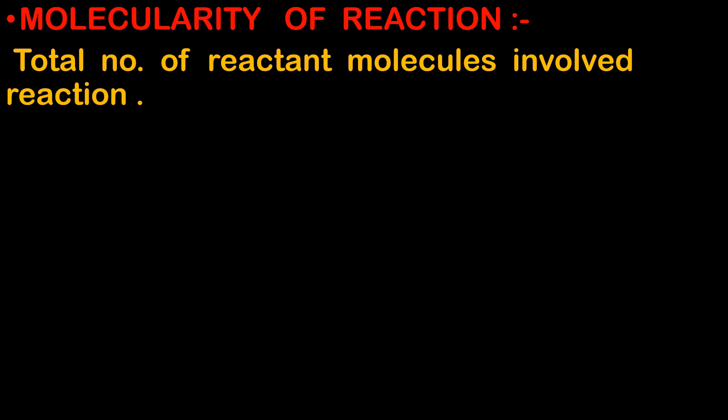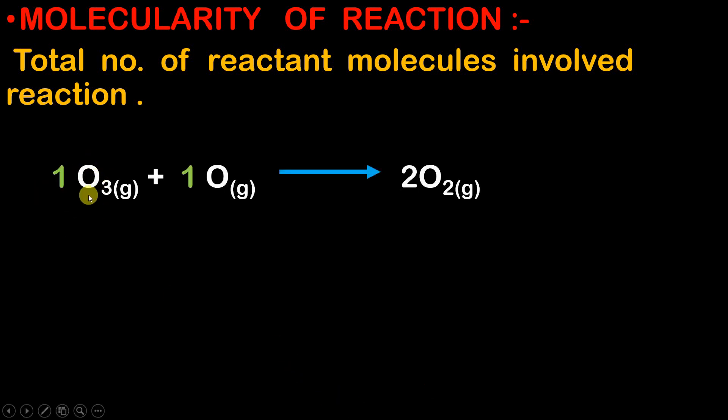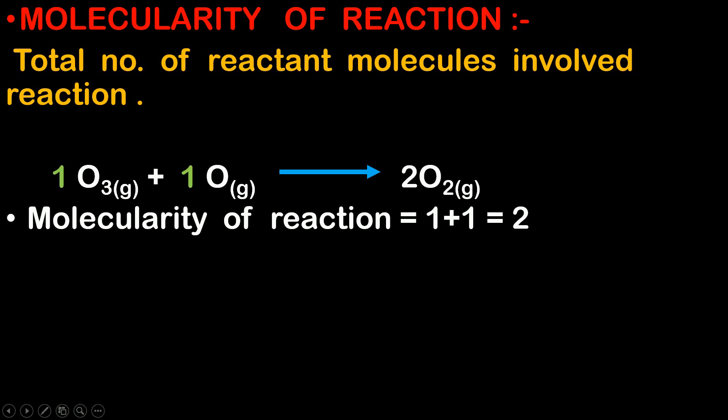Now let us understand the molecularity of a reaction. The simple definition is: the total number of reactant molecules involved in a reaction is called the molecularity of the reaction. You just need to count the total number of reactant molecules. For example, one molecule of O3 reacts with one molecule of O, so one plus one equals two. Therefore, the molecularity of this reaction is two.